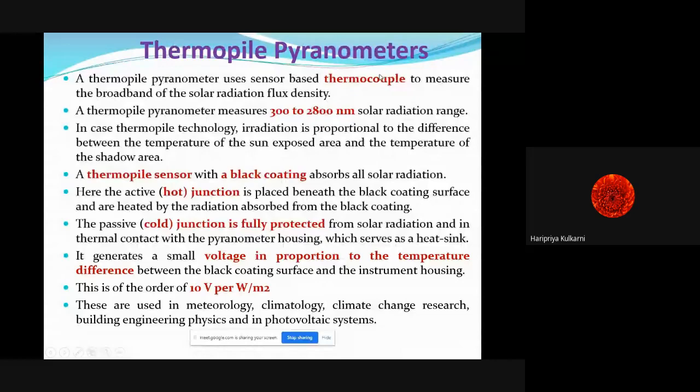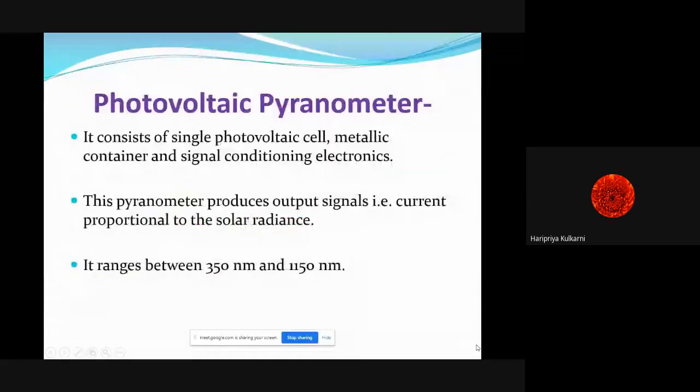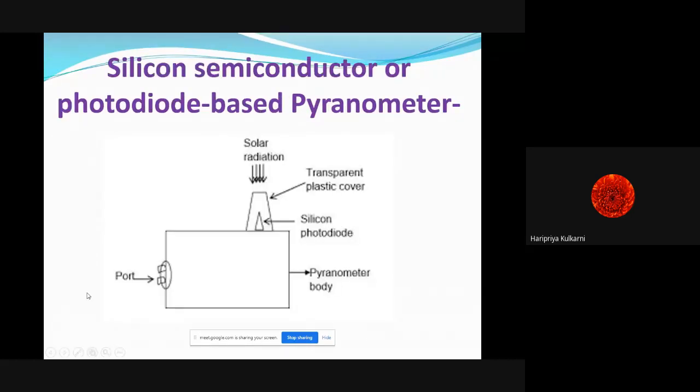The next technology is the photovoltaic pyranometer. It makes use of a single photovoltaic cell and some electronic circuitry for controlling. Photovoltaic pyranometers give the output signal as a current which is proportional to the solar irradiance. The sensor element is changing, and it gives us the range from 350 nanometers to 1150 nanometers.